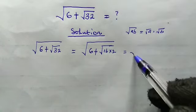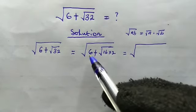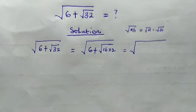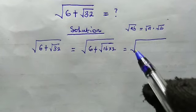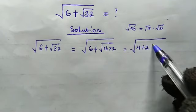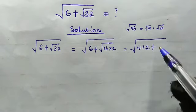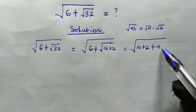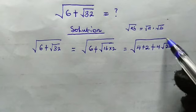So this is going to be equal to the square root of, first of all, we are going to rewrite 6 as the sum of two numbers. That would be 4 and 2. Then plus the square root of 16 which is 4, then multiplied by the square root of 2.